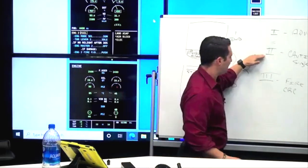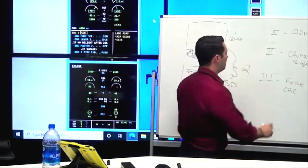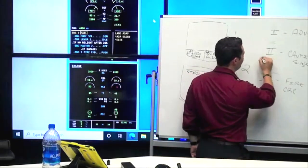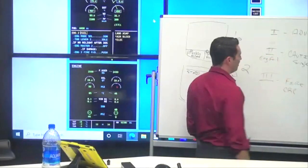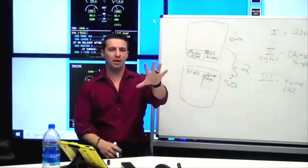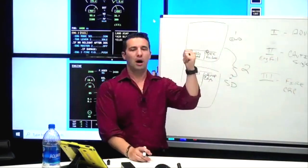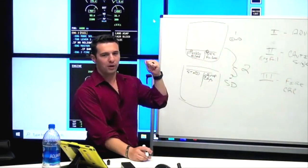A level two ECAM would be an engine failure. Engine failure is a level two, single chime - bing. The engine has failed. I'm going to take you through an example here we're going to look at.